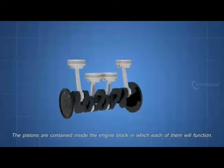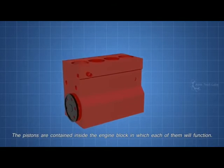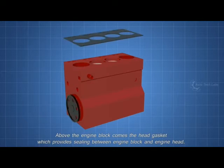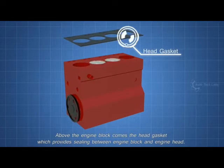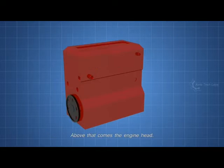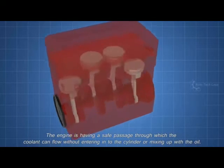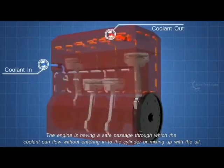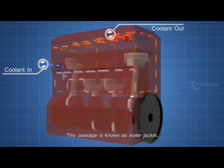These are the main parts involved in an engine cooling system. Now let's see how these parts work together. The pistons are contained inside the engine block in which each of them will function. Above the engine block comes the head gasket, which provides sealing between engine block and engine head. It avoids compression leaks and oil or coolant leaks into the cylinders. Above that comes the engine head. The engine is having a safe passage through which the coolant can flow without entering into the cylinder or mixing up with the oil. This passage is known as water jacket.